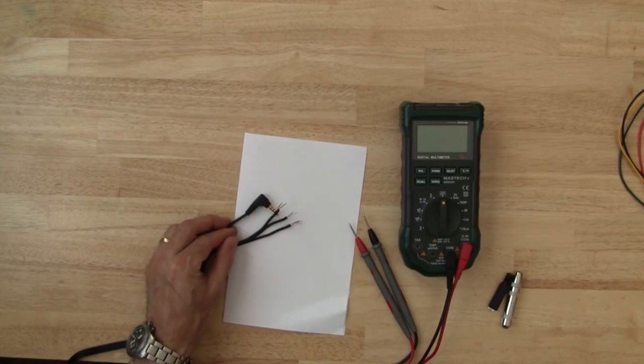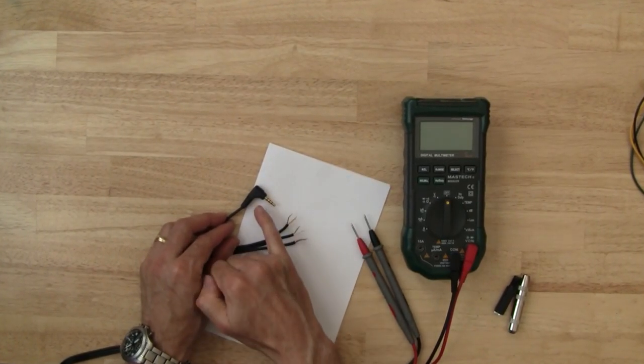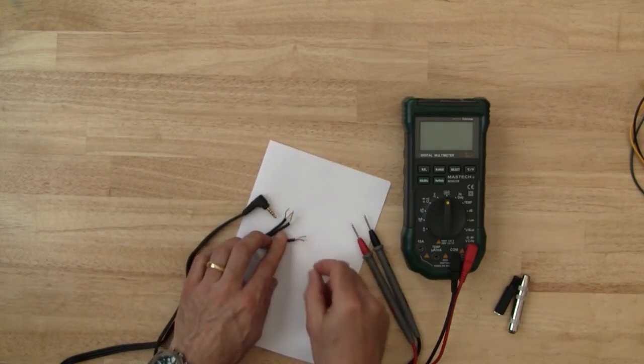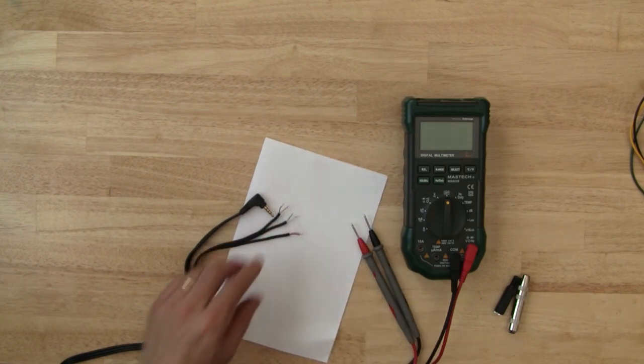Let's take a look. The first thing to do is to identify for the cable which of the wires is connected to the tip ring ring and sleeve. Now in my cable the wires are color-coded yellow white and red which is convenient.